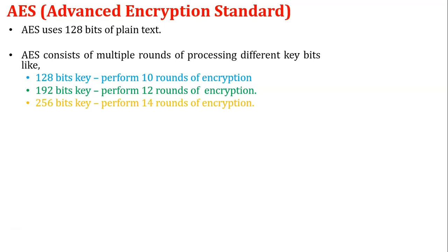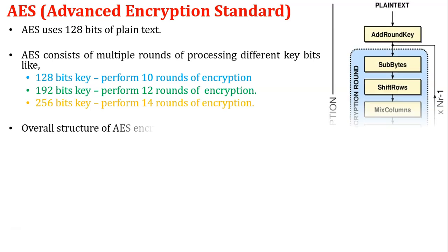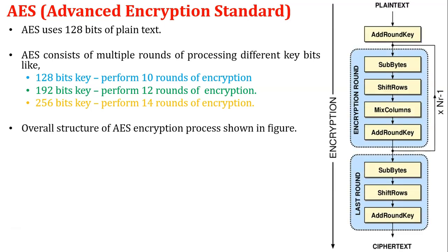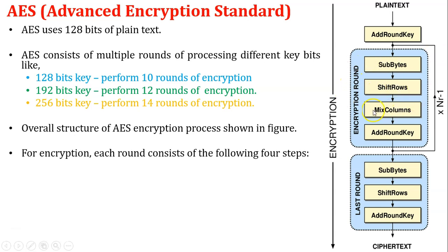So in the AES encryption algorithm, the plain text size is fixed at 128 bits, but it uses different sizes of encryption keys. This diagram shows the overall structure of the AES encryption process. In AES, each round consists of the following four steps.